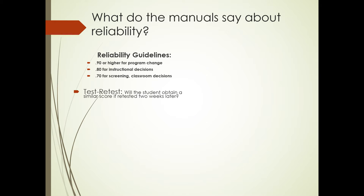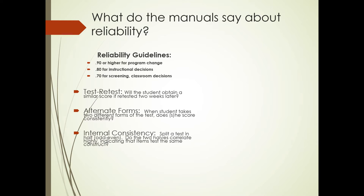So the kinds of reliability that you should see in the manual are test-retest, answering the question, will the student obtain a similar score if he's retested two weeks later? Alternate forms. If there are two forms of the test, does the student earn a similar score on both forms? And then internal consistency. If you split a test in half and compare the odd number items to the even number items and the responses that students have to those, they should correlate highly indicating that the test items test the same thing.